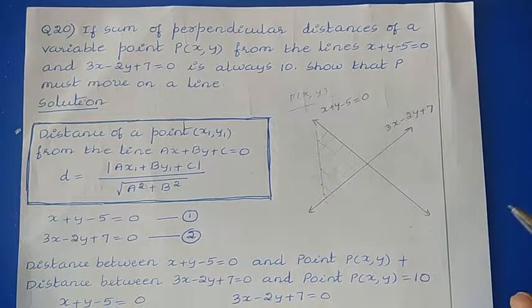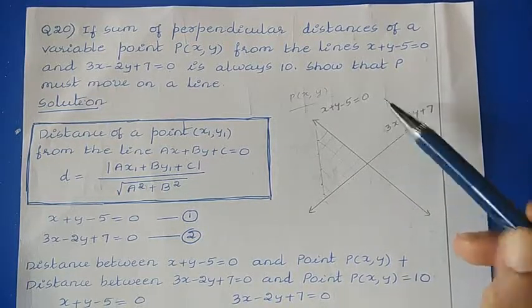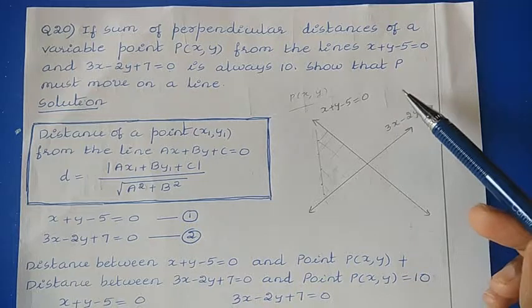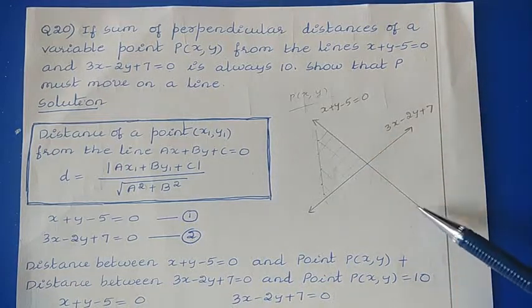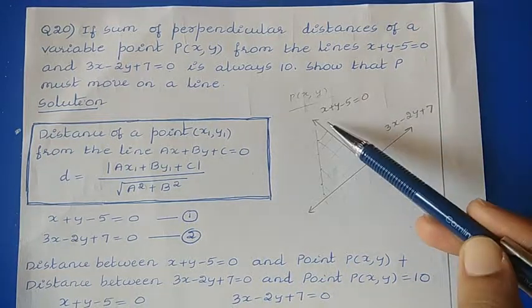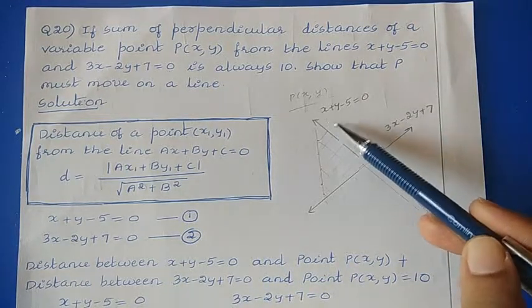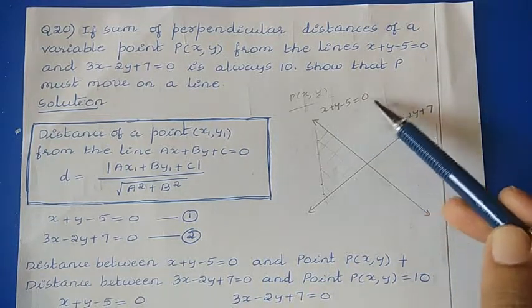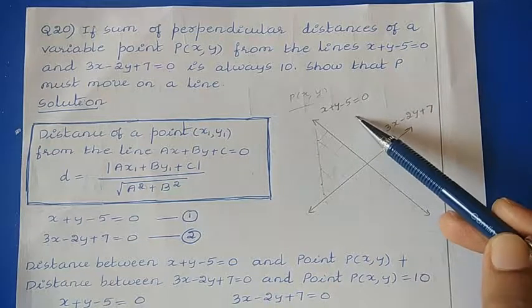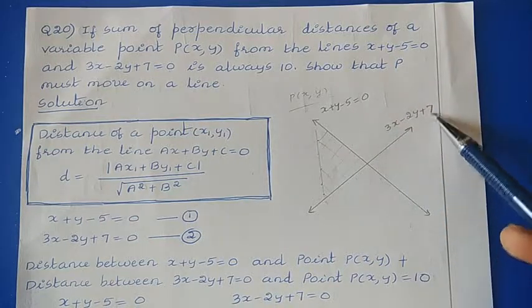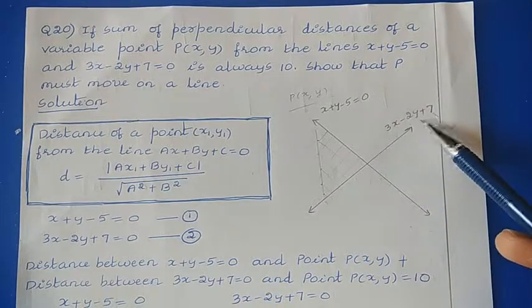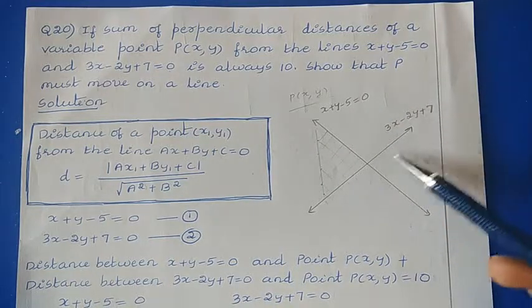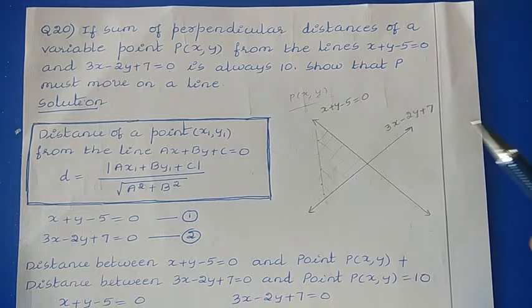So here they have mentioned about two lines. Let us say that one line is x+y-5=0, and another line is 3x-2y+7=0.